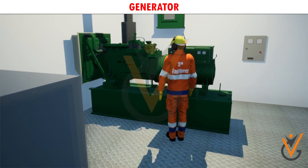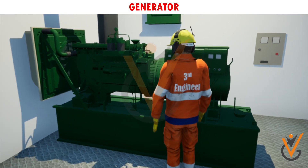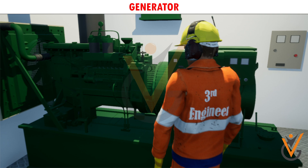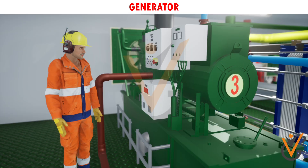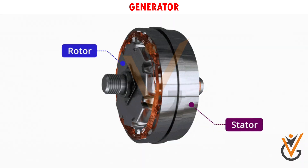Shipboard power is generated using a prime mover and an alternator working together. An alternating current generator is used on board. The generator consists of a stationary set of conductors wounded in coils on an iron core. This is known as the stator.